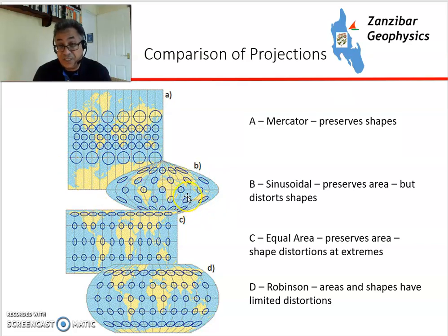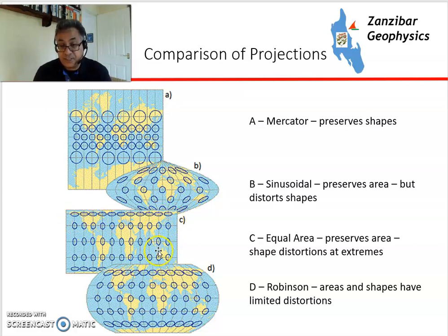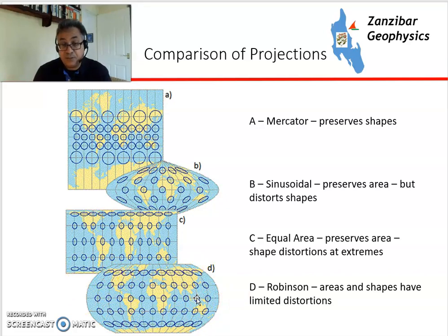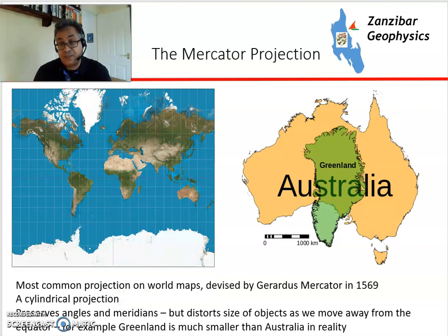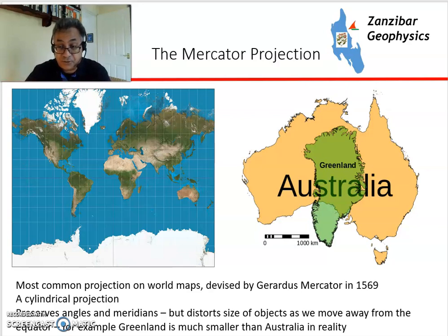Sinusoidal preserves area but distorts shapes, so things don't quite look like what they ought to on the globe. Equal area keeps the areas correct but has shape distortions, particularly at the extremes. Robinson offers limited distortion — it's a bit of a jack-of-all-trades which makes everything look okay but limits compromises everywhere. Mercator was developed in the 16th century by Gerardus Mercator, a Flemish cartographer.